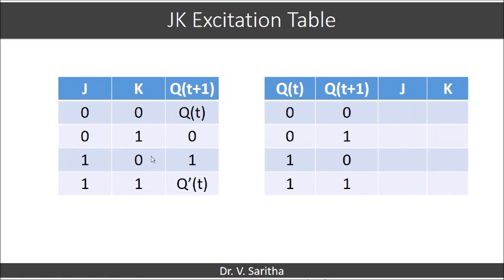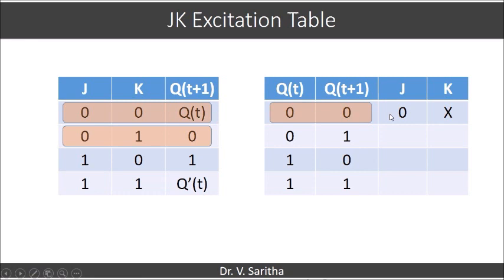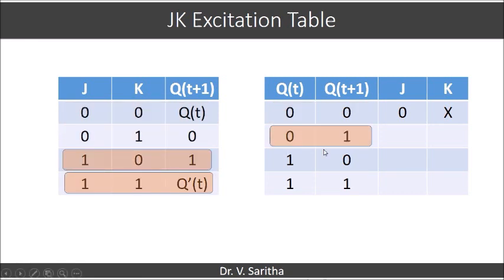Similarly, let us consider the JK excitation table. For the first case when both are 0 — Q(t) is 0 and Q(t+1) is equal to 0 — these two cases will be considered: J is 0 and K is don't care. Now there is a small variation compared to the SR excitation table. When Q(t) is 0 and Q(t+1) is 1 and both are complement to each other, again two cases will be considered. J is 1 and K becomes don't care.